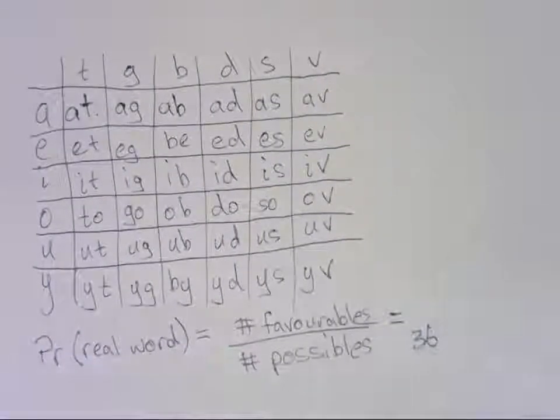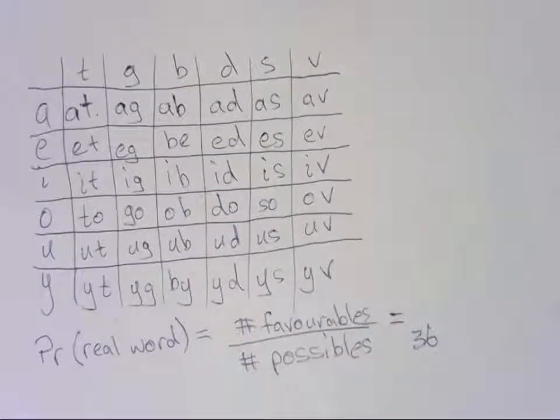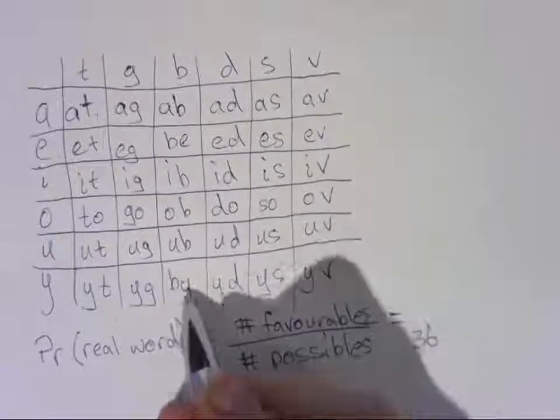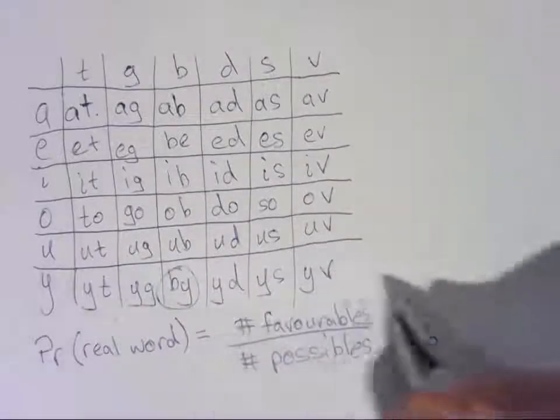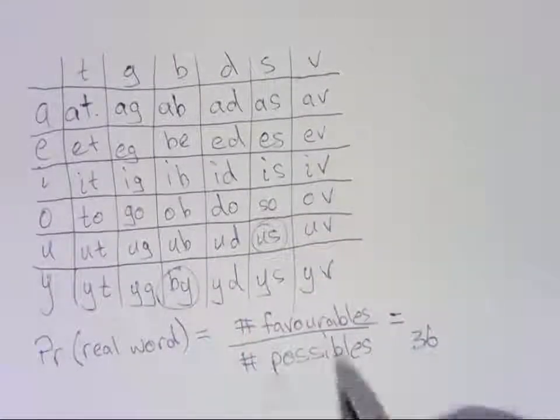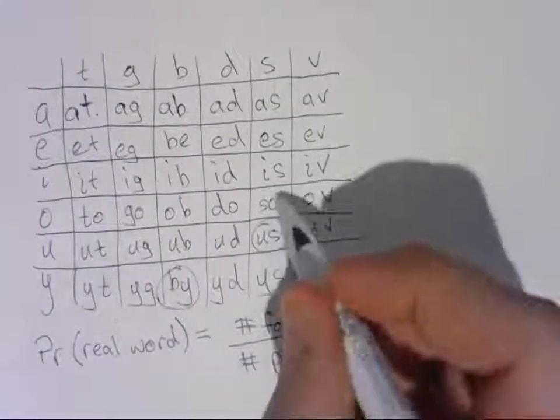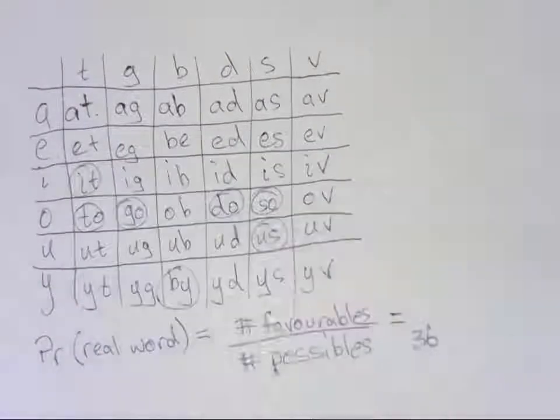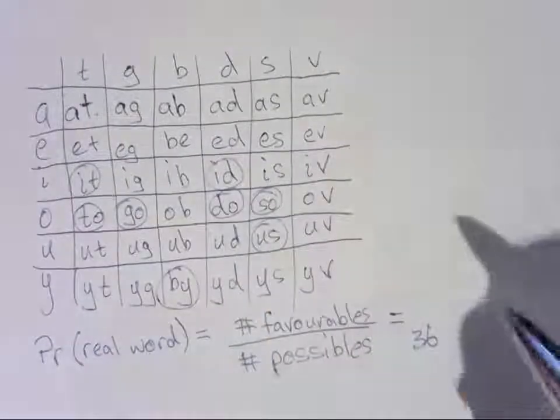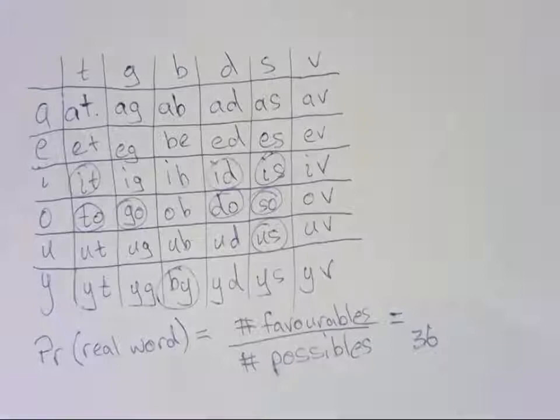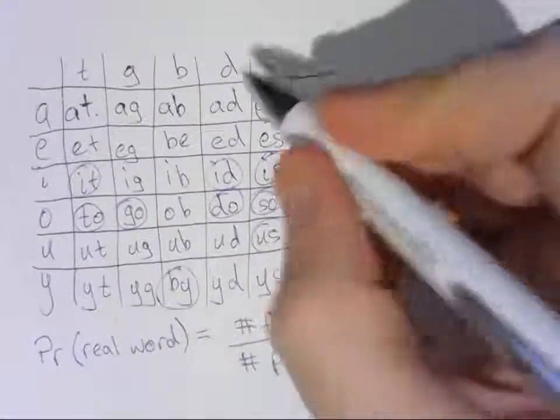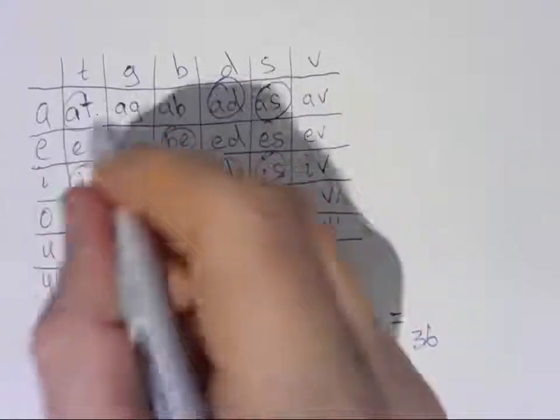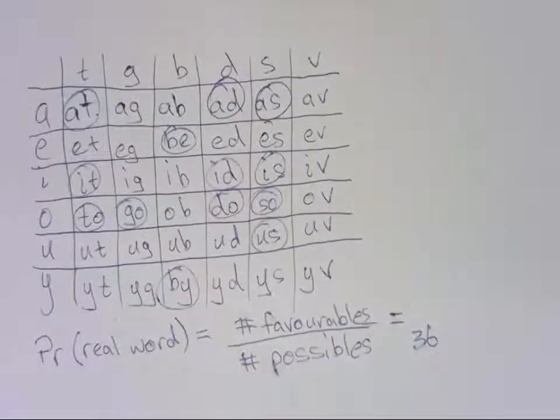On the other hand, the number of favorables, we need to know how many of these cells are going to give us actual real words. So let's go through now and circle those. I think by is a word. I think us is a word. I'm pretty sure none of these others is. So, do, go, to, it, id, remember I said is a word, is, as, and add, and be, and at. Alright, I think that's all of them.